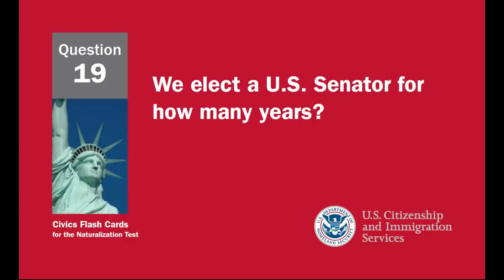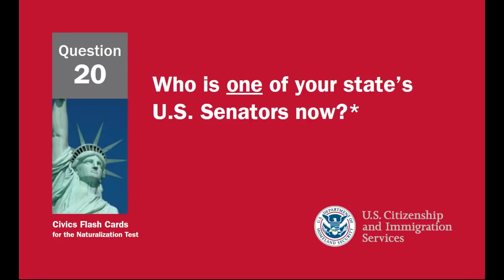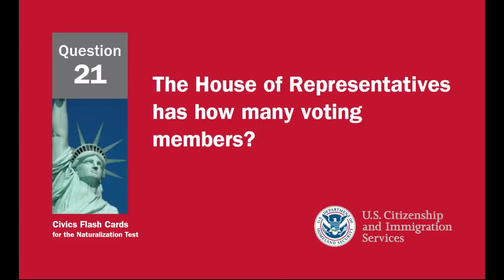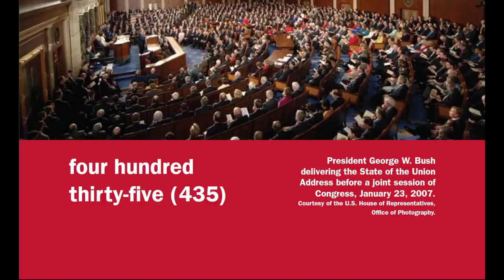We elect a U.S. Senator for how many years? Six. Who is one of your state's U.S. Senators now? Answers will vary. District of Columbia residents and residents of U.S. territories should answer that D.C. or the territory where the applicant lives has no U.S. Senators. The House of Representatives has how many voting members? 435.